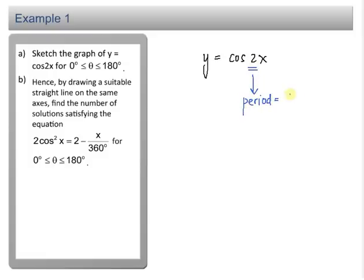Your period for cos 2x is 360 divided by 2. That is, your period is 180°. And then for cos 2x, your range is from the minimum value of -1 to the maximum value of 1.